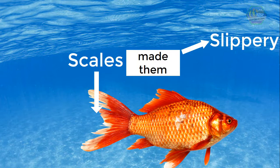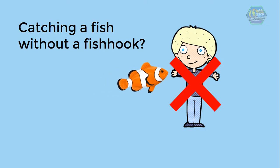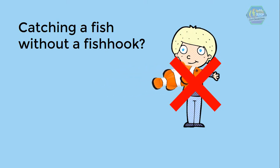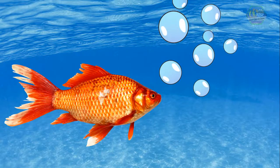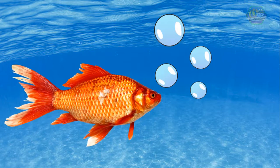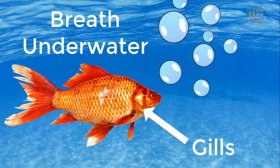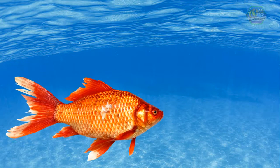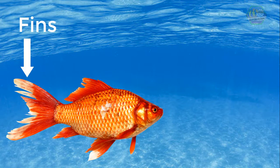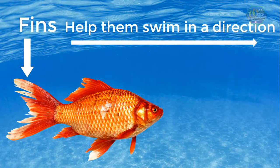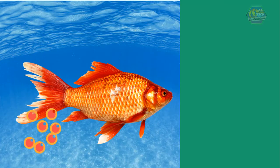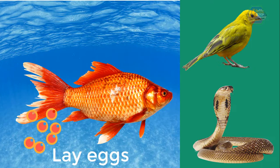So if you think you can catch a fish without a fish hook, think again! Fish have gills that help them breathe underwater — gills extract oxygen from the water. They also have fins on their body to help them swim in a direction.